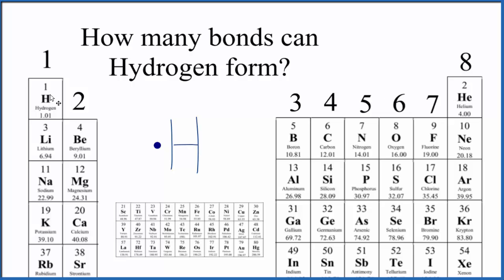Hydrogen is in the first row on the periodic table, the first period, and can only hold two valence electrons. So hydrogen only has one valence electron; we could add one more in that first energy level, but then it would be full. So hydrogen is only going to form one covalent bond.